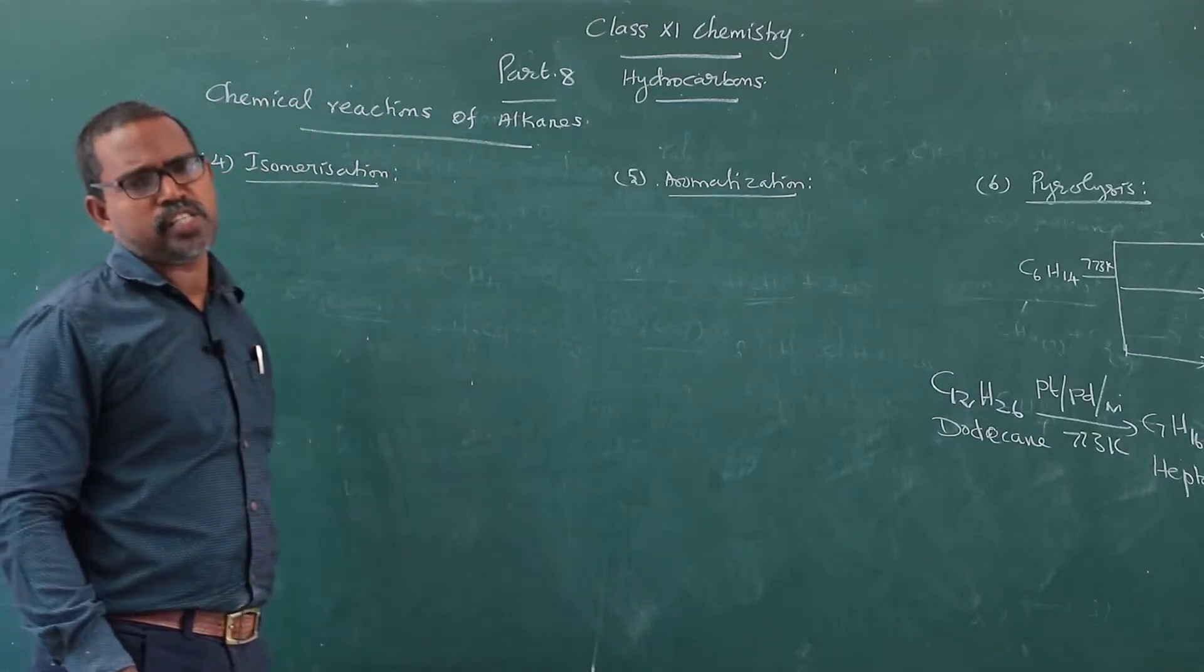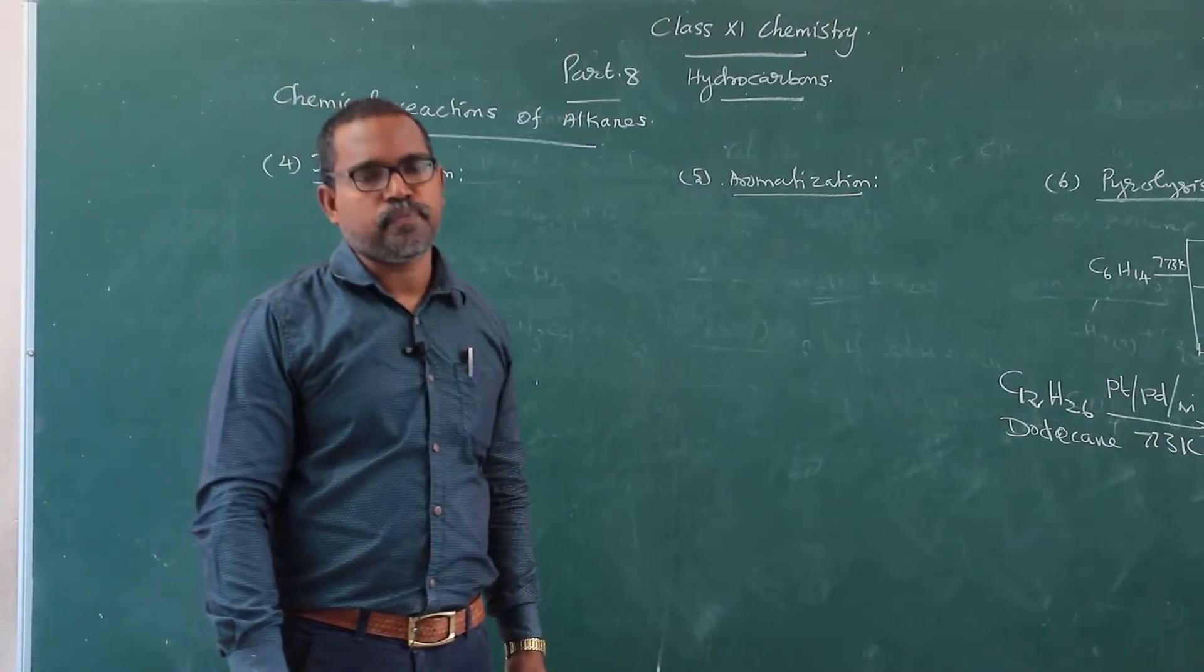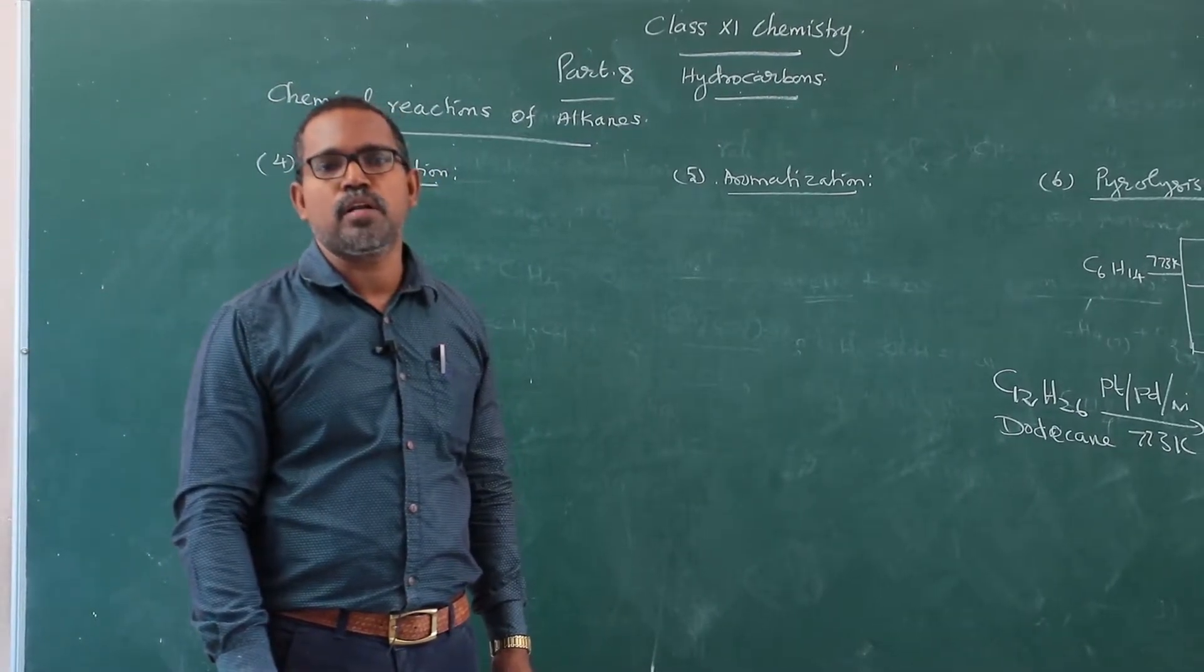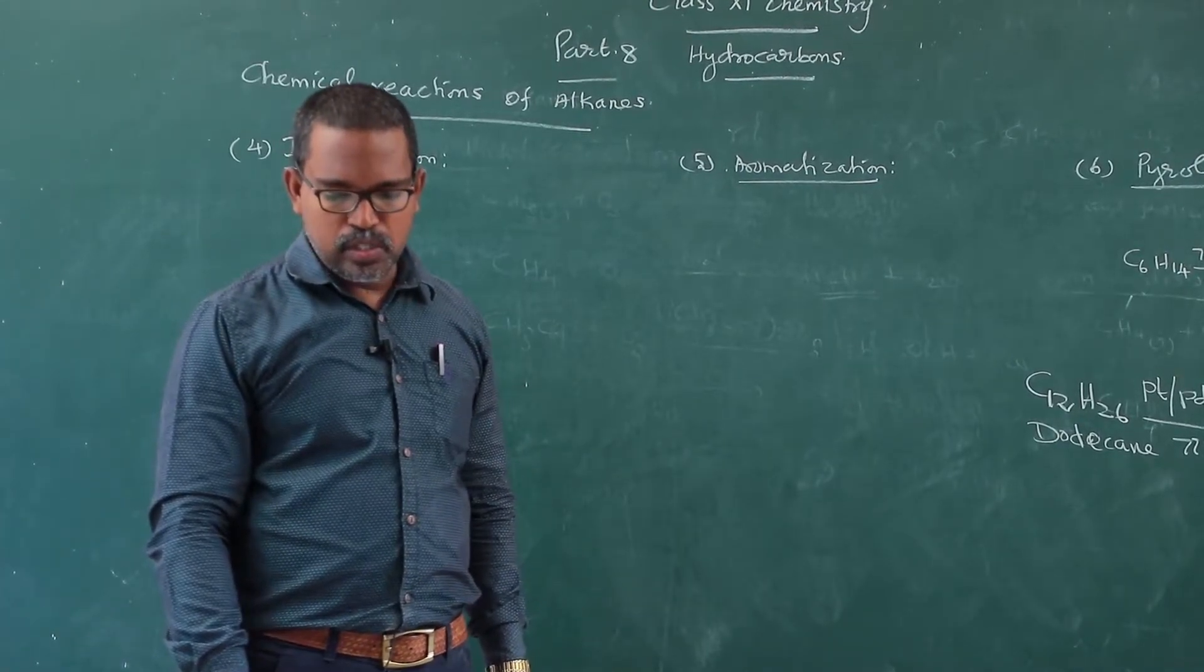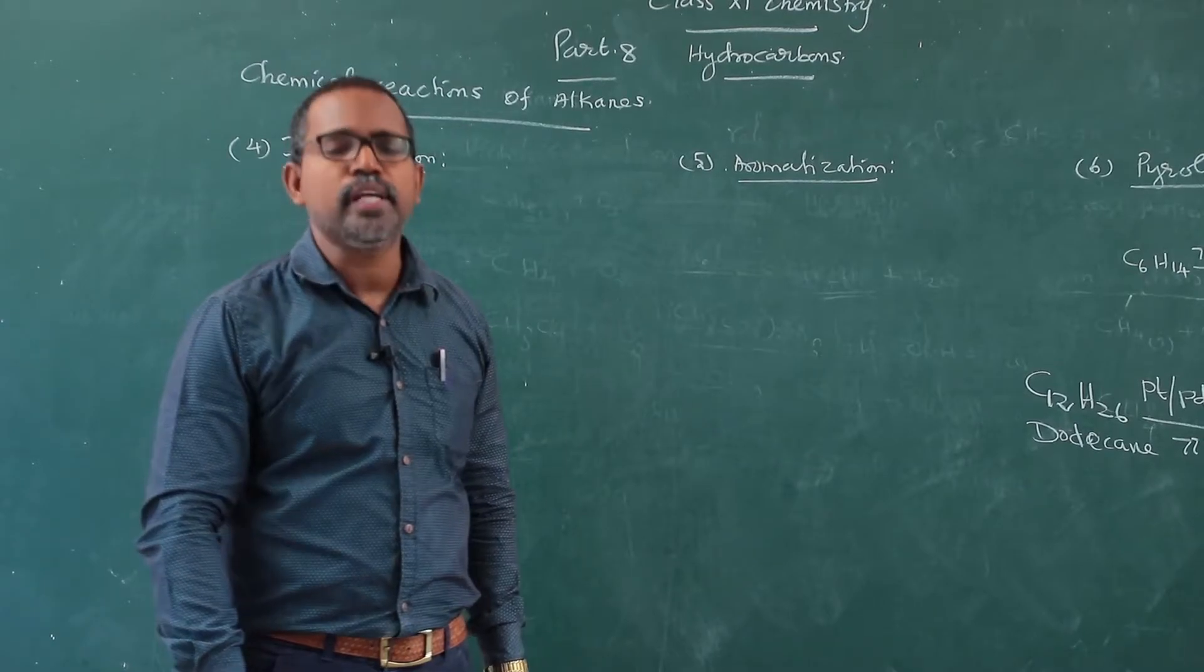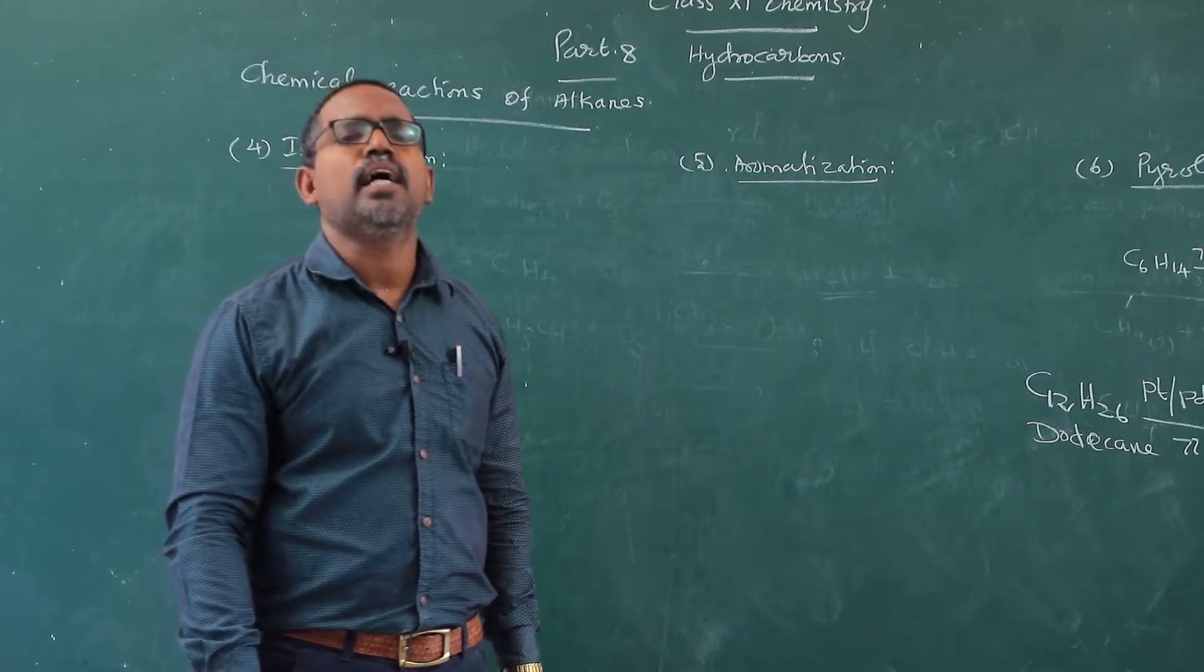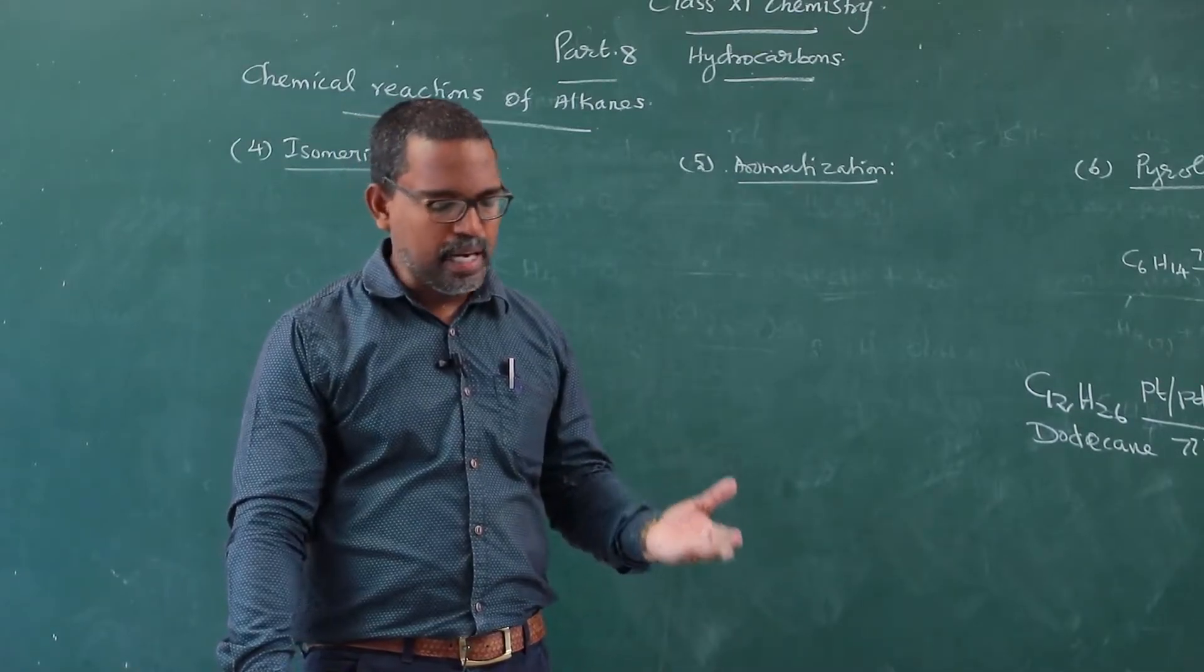First one is isomerization. So, I already told you what is isomerization. The compounds having the same molecular formula but differ in carbon skeletons. Here also, normal alkanes are heated with anhydrous aluminum trichloride. Especially, we are taking normal hexane.